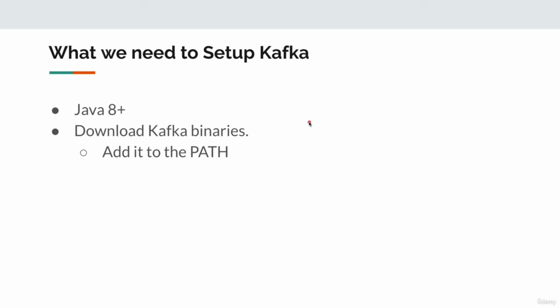What do we need to set up Kafka? Kafka itself was developed mostly using Java plus Scala. To set up Kafka, we need to have Java installed, then we need to download the binaries, unzip them, and add the bin directory to the path variable. That's it — we should be good.